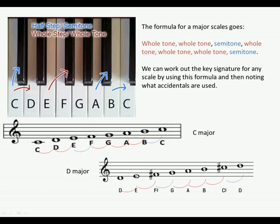So D major scale has an F sharp and a C sharp, and D major's key signature would have an F sharp and a C sharp. Using the formula of whole tone, whole tone, semitone, whole tone, whole tone, whole tone, semitone, we can figure out any scale — whether starting on F or A — and know exactly what accidentals are in each scale.